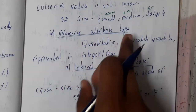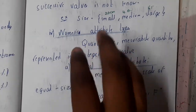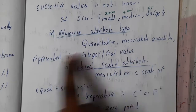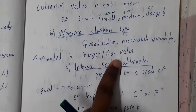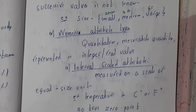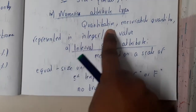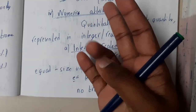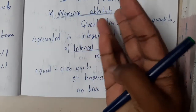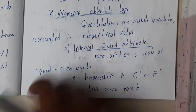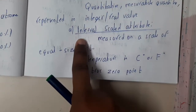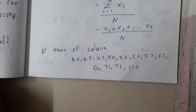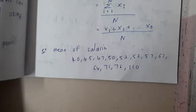Next are numerical attribute types. Numerical means we are able to count or measure it. These are measurable quantities represented in integer or real values, also called quantitative attributes. The previous ones — nominal, binary, and ordinal — are three qualitative attributes. Remember that. The two subtypes of numerical attributes are interval scaled and ratio scaled.